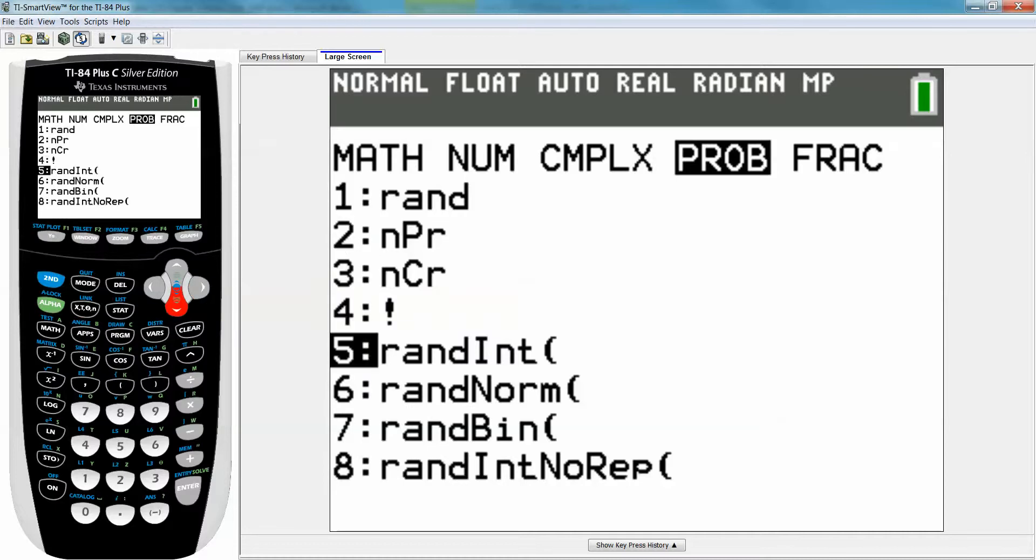Now, the old calculators have just the first seven choices. The new calculator, like this one is, has the eighth choice, which is even nicer. So I'm going to show you both. So let me show you the one that's only available on the old calculators, the TI-83s and 84s, but not the newest version, which is randint. So I'm going to pick that.